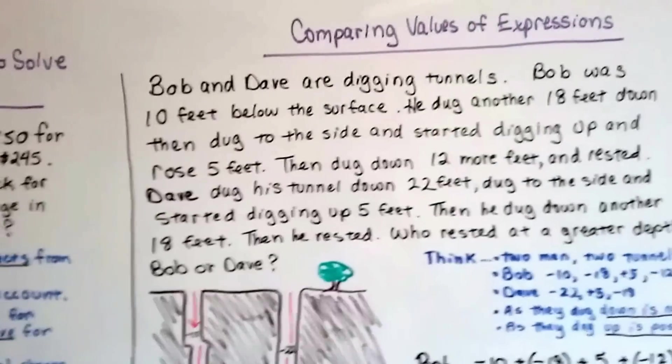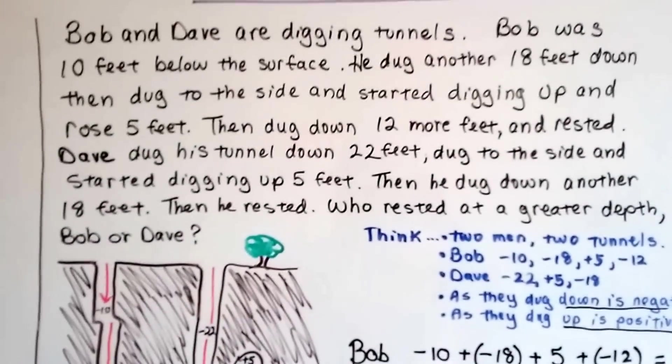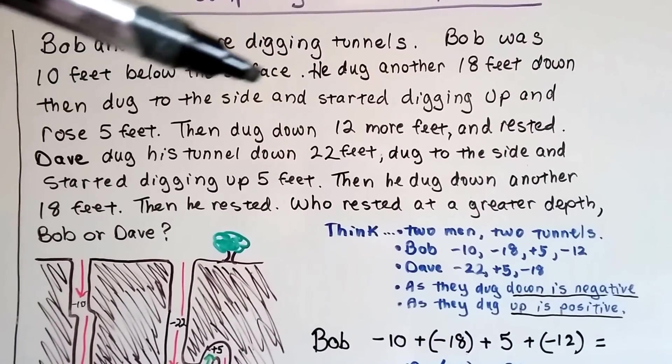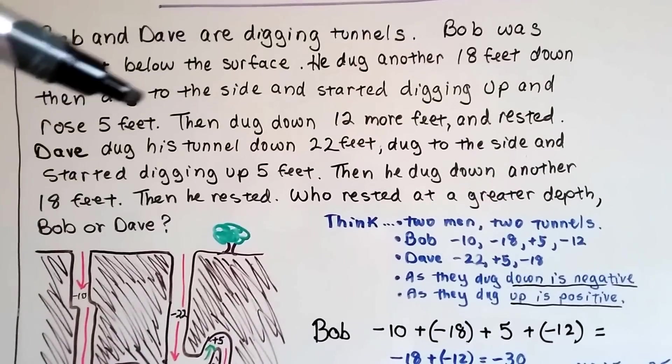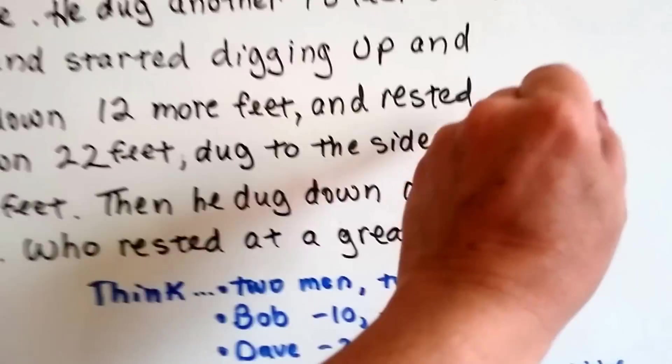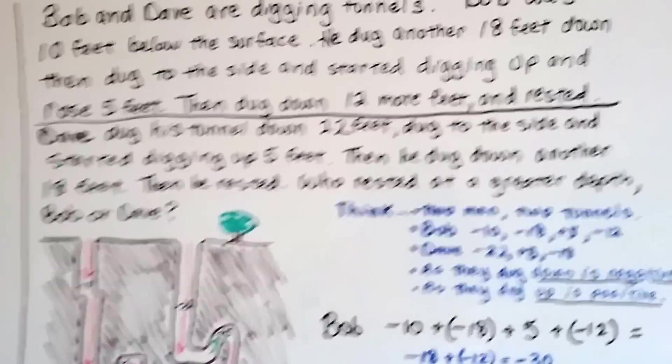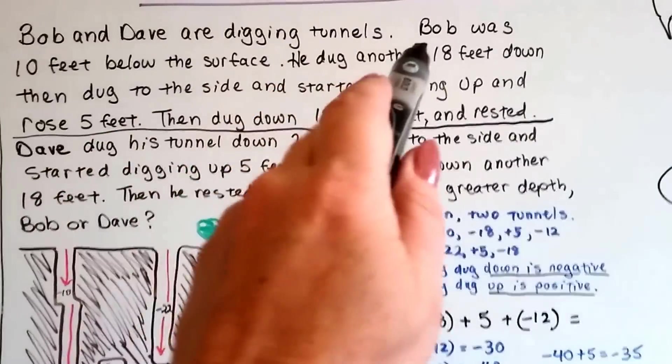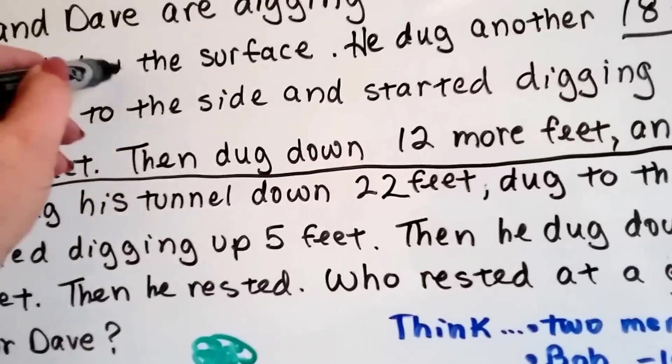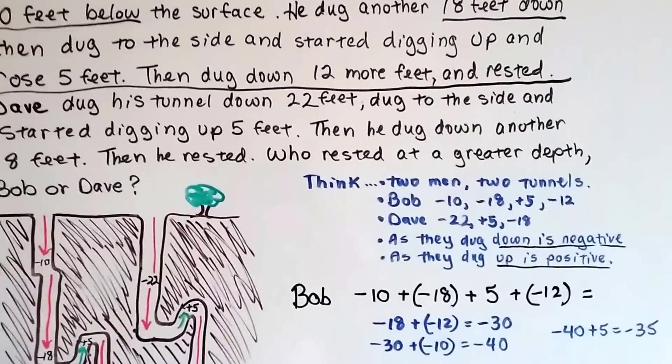This one kind of reminds me of that video game, Miner Dig Deep. Bob and Dave are digging tunnels. Here's the tunnels they're digging. Bob was 10 feet below the surface, he dug another 18 feet down, then he dug to the side and started digging up and rose 5 feet. Then he dug down 12 more and rested. So, that's where Bob is at. We'll cut this in half, and it doesn't hurt to mark up your word problems. We could even take the feet down and underline that, and the feet below, and rose 5 feet. You can do stuff like that to help you with your word problems.